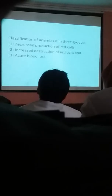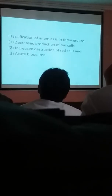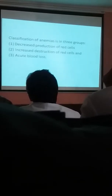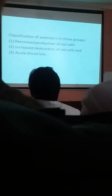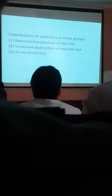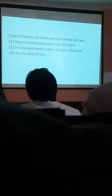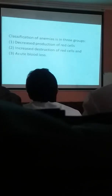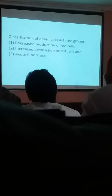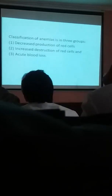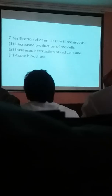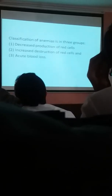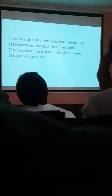Whenever we classify anemia, you might have been taught the classification according to the size of the RBC — whether it is normocytic, microcytic, or macrocytic. But the overall conceptual classification is basically three groups: one is either decreased production of red blood cells, or increased destruction of those normally produced red blood cells, or acute blood loss. Today we will be discussing on the increased destruction of red blood cells in hemolytic anemia.